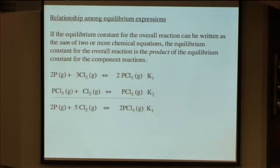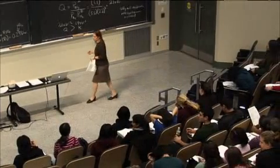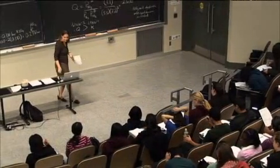All right, what do I have to do before I can add these together effectively and have things cancel out? I need to multiply what? Second equation by? Two. Two, yeah.